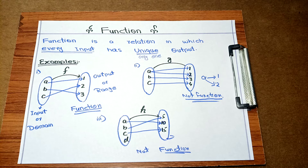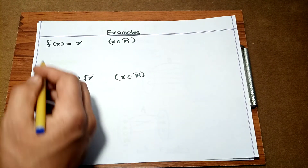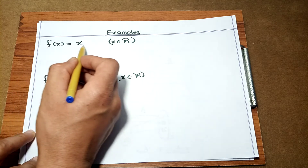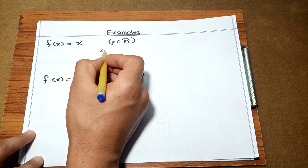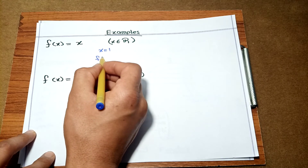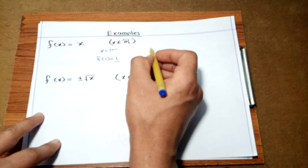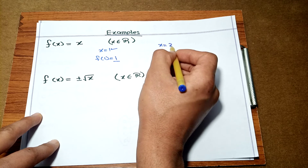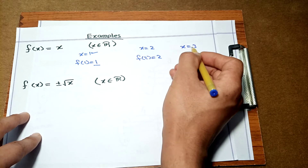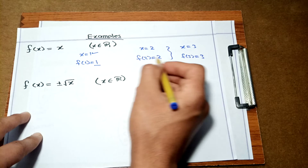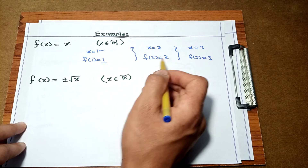Now let's look at a mathematical expression. Consider function f(x) = x, where x is any real number. When x = 1, f(1) = 1. When x = 2, f(2) = 2. When x = 3, f(3) = 3. Every input has a unique output, so this is a function.